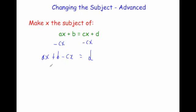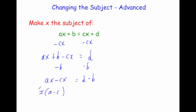Now we want to get x on its own, so let's get rid of the plus b by taking away b from both sides. The left hand side becomes ax subtract cx, and the right hand side becomes d subtract b. We've got a and c here, so it's useful to factorise: x bracket a minus c equals d subtract b — we've taken x out as the common factor.